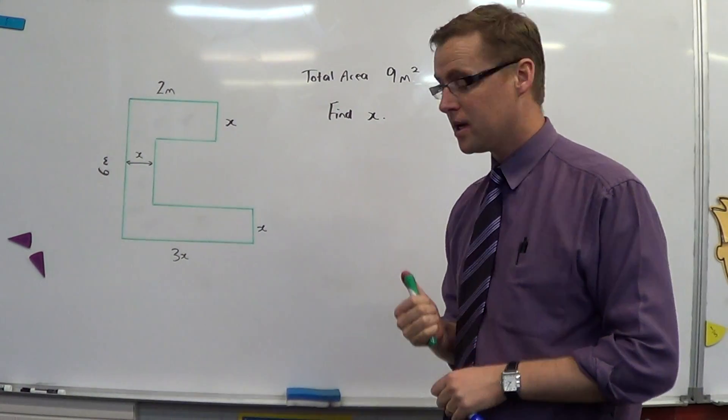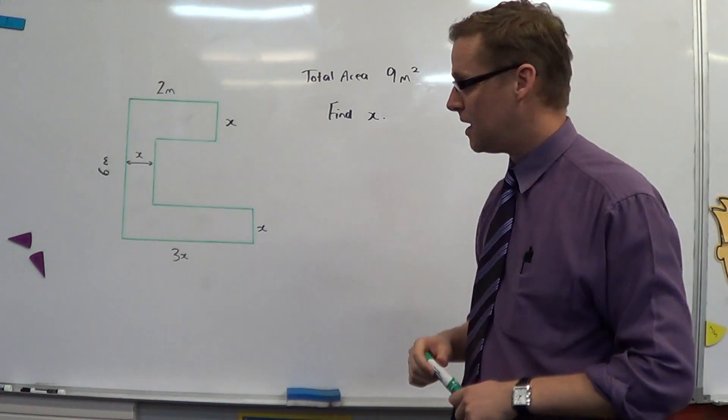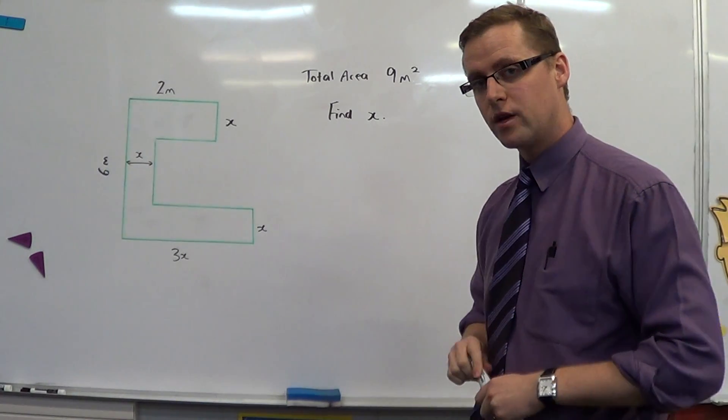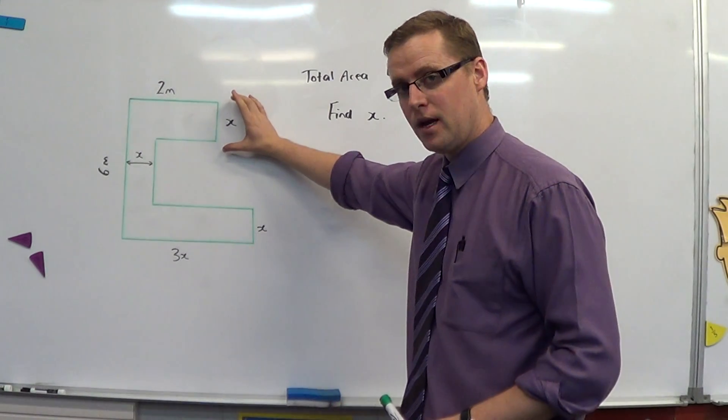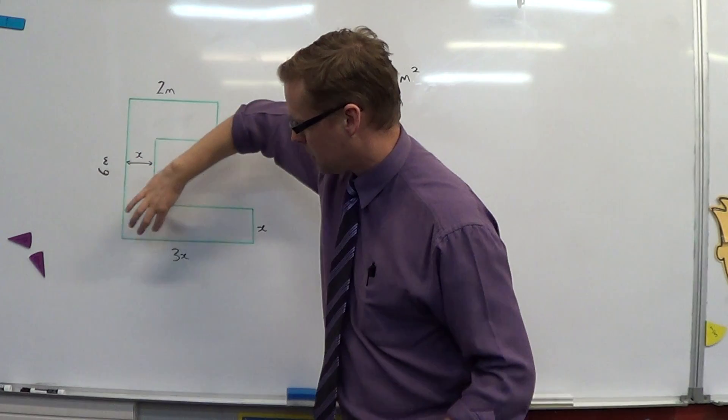Okay, four minutes, let's see how we go on in Excellence Algebra, NCEA. This is from 2011. It's a problem about having a pathway made of concrete that is x-wide that follows around the shape of a building.